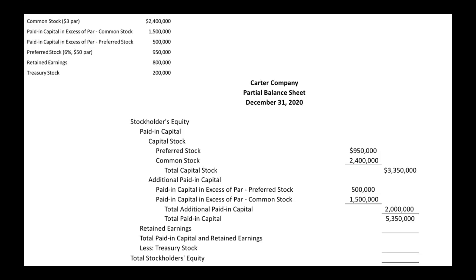Now we move on to the next piece of stockholders' equity: retained earnings. In this example, retained earnings are $800,000. Total paid-in capital and retained earnings will be $5,350,000 plus $800,000, giving us $6,150,000. Then we subtract out treasury stock — that's stock purchased back from shareholders — which is $200,000. That gives us total stockholders' equity of $5,950,000.